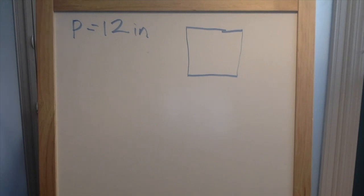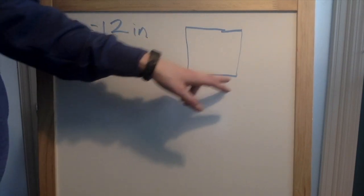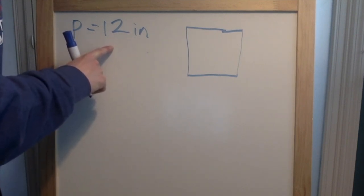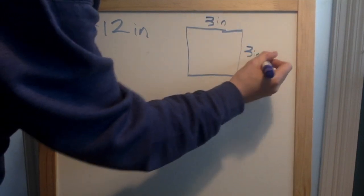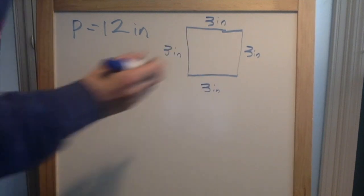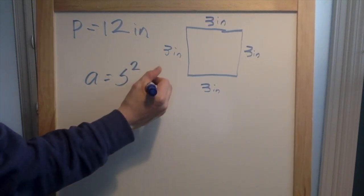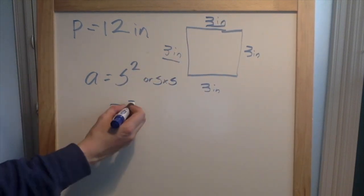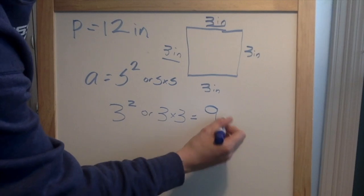Our next problem says the perimeter of this square is twelve inches. What is the area of the square? The first thing we need to figure out is, if we know the perimeter is twelve inches, how much is each side. We know a square has four equal sides. So if my perimeter is twelve, I need to divide that by four to figure out what each side is. Four fits into twelve three times, so each side is going to be three inches. The problem asks what is the area. Area equals side squared, or side times side. Each side is three, so we do three squared, which is three times three. The area of this square is nine inches squared.